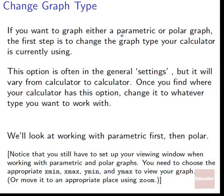If you want to graph either a parametric or a polar graph, the first step is to change the graph type your calculator is currently using. This option is often in the general settings on your calculator, but it will vary from calculator to calculator. Once you find where your calculator has this option, change it to whatever type you want to work with.